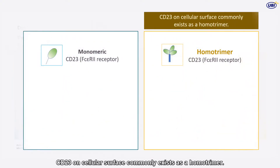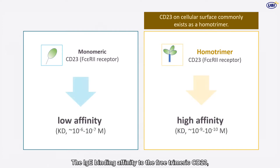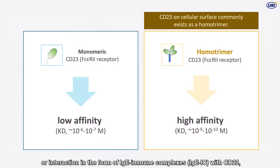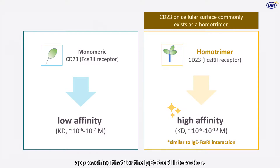CD-23 on the cellular surface commonly exists as a homotrimer. The IgE binding affinity to the free trimeric CD-23, or interaction in the form of an IgE immune complex with CD-23, could yield an avidity strength approaching that for the IgE–FC-Epsilon-R1 interaction.